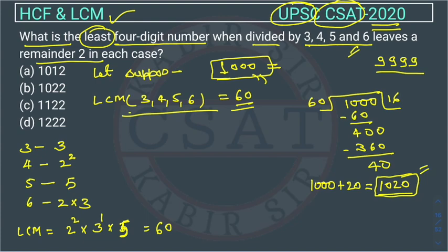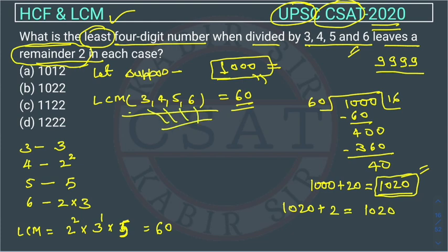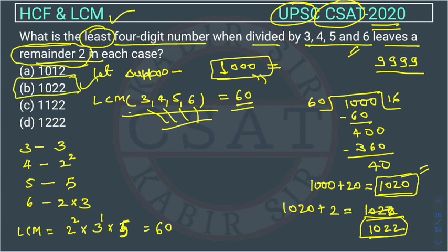But the question says the number leaves a remainder of 2. So we need a number which leaves remainder 2 when divided by 3, 4, 5, and 6. We add 2 to 1020, giving 1022. Whenever we divide 1022 by any of these numbers, the remainder will be 2. So the answer is 1022, which is option B. This is a classic type of HCF and LCM problem.